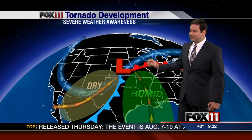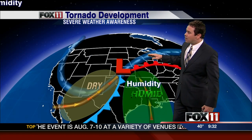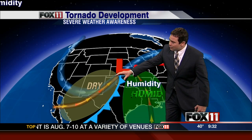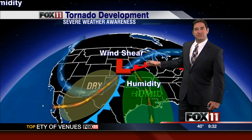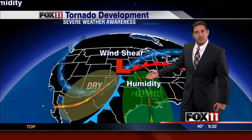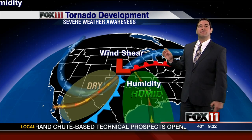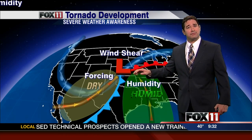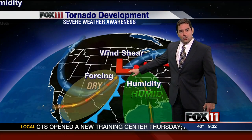So in a typical setup, an area of low pressure comes out into the plains and draws humid air northward from the Gulf of Mexico. We also get wind shear because winds are coming in from the south and southwest behind the storm and from the south out ahead of the storm. It creates winds coming from different directions, and we also get a forcing mechanism in the form of a cold front, a warm front, or the area of low pressure.